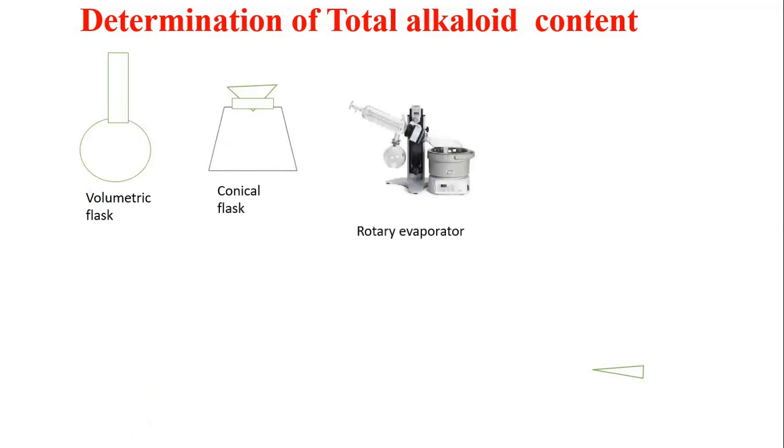So how much quantity of alkaloids are present in a particular part of the plant, we have to determine by this examination. For this purpose, we require volumetric glass, conical flask, rotary evaporator, and burette. These are the requirements for this examination.